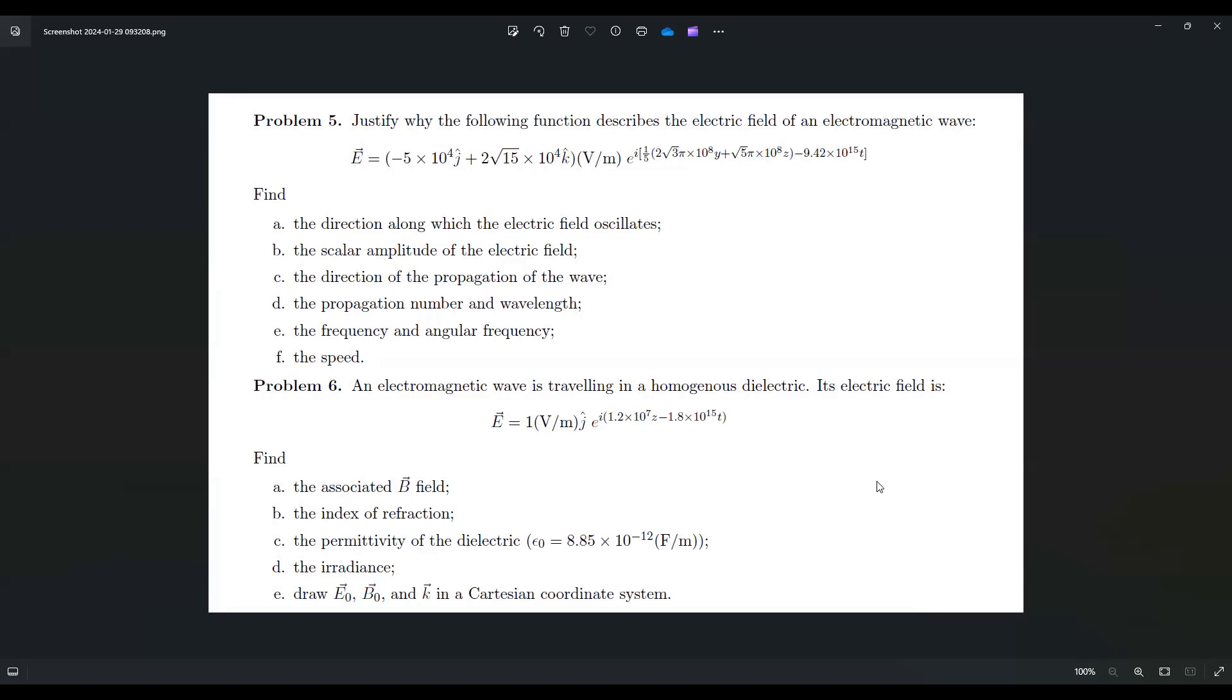Problem 6. An electromagnetic wave is traveling in a homogeneous dielectric. Its electric field is this one. Find: A. The associated B field. B. The index of refraction. C. The permittivity of the dielectric. D. The irradiance. Draw E0, B0, and K in a Cartesian coordinate system.